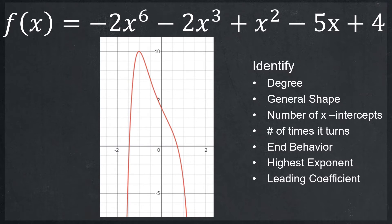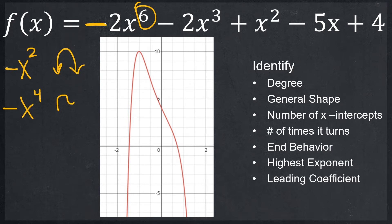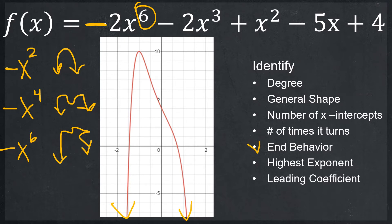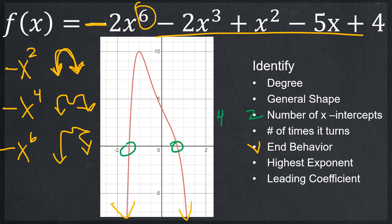Let's try degree six with a negative leading coefficient. Negative x-squared is a downward U, negative x-to-the-fourth is a downward W, so negative x-to-the-sixth has some weirdness in the middle but still both ends go down. The general shape always stems back to that U — it's what's going on in the middle that varies. I only have two visible x-intercepts, meaning four imaginary answers. There's a definite turn and then odd behavior in the middle.